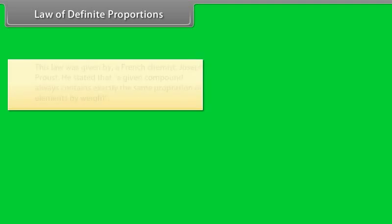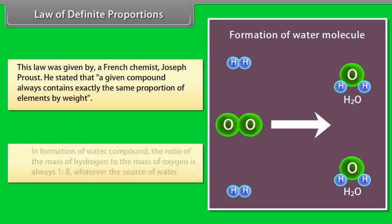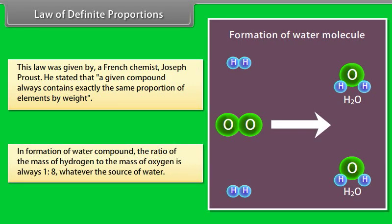Law of Definite Proportions. This law was given by French chemist Joseph Proust. He stated that a given compound always contains exactly the same proportion of elements by mass. For example, in the formation of water, the ratio of the mass of hydrogen to the mass of oxygen is always 1:8, whatever the source of water.